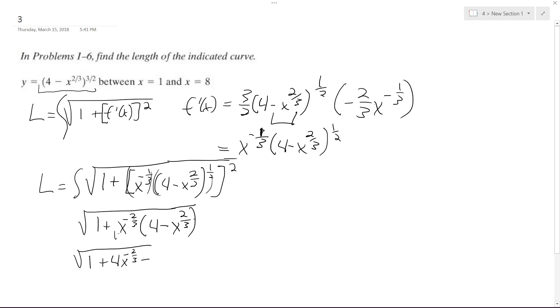The negative 2 thirds and the 2 thirds cancel out, and we just get minus 1, so these ones cancel out, and we're left with the square root of 4 x raised to the negative 2 thirds.